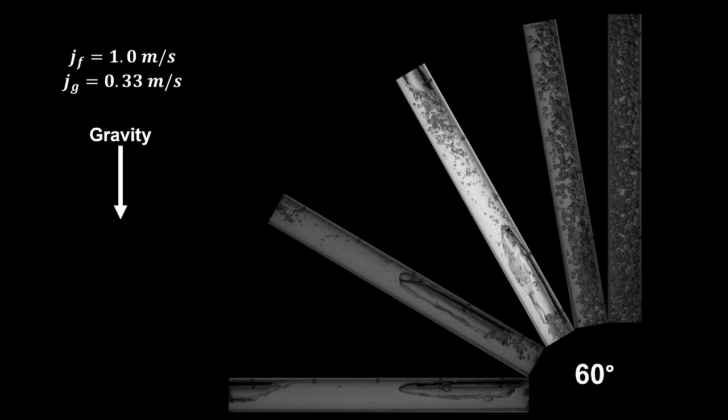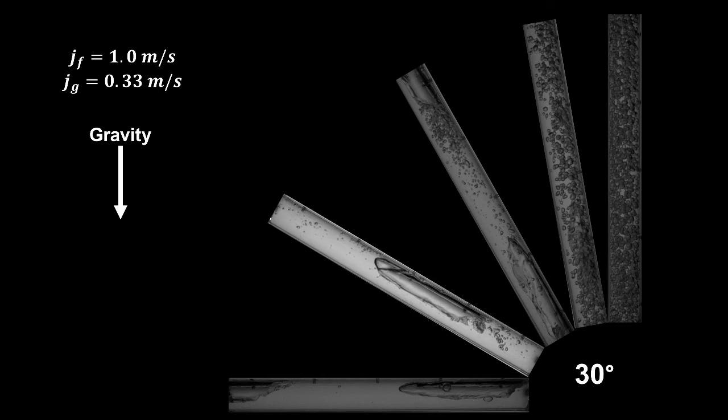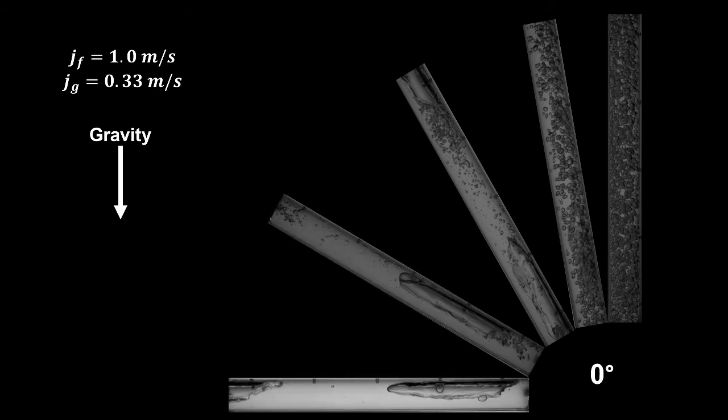In this case, while the flow is in a bubbly regime in vertical flow, as the angle decreases, the bubbles migrate to the top of the pipe and coalesce.